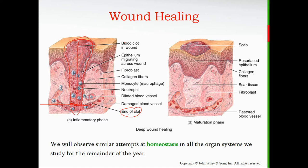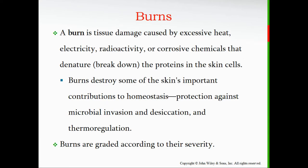The blood clot extends all the way down to plug the hole in the blood vessel, and as it dries it forms a scab. There are lots of macrophages — cells that fight infection — along with neutrophils, another type of white blood cell, keeping infection out of the wound. As connective tissue closes the gap, scar tissue forms, and the epidermis closes back leaving a scab on the surface.